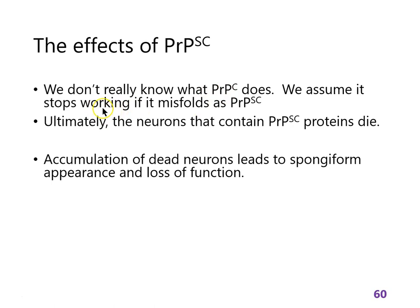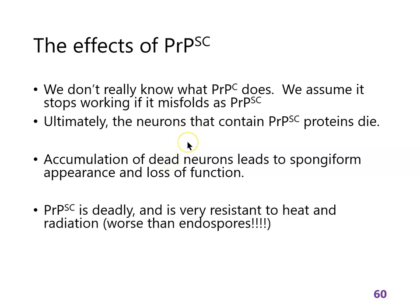We don't know what PrPC does — we don't know what the healthy version does. If it turns to PrPSc, it presumably stops doing what it was doing before, and it also kills the neuron. As the dead neurons accumulate, we lose their function, but also the brain gets that spongiform appearance. It gets worse because PrPSc is resistant to heat and radiation. That means if a deer dies from chronic wasting disease and slowly rots, all of its neurons can potentially have this in them, and those proteins will survive in the environment — they're more resistant than endospores. That's part of why we think there's an ongoing outbreak of chronic wasting disease right now.